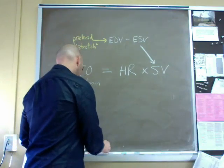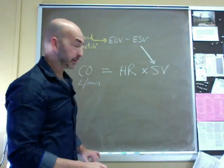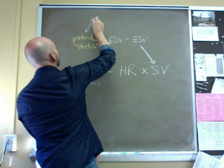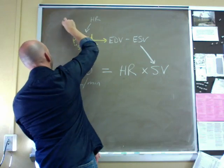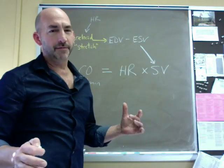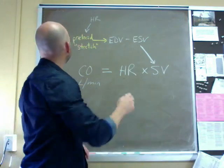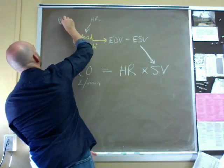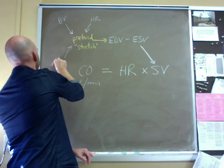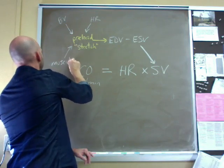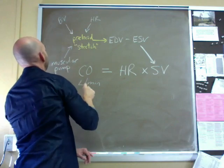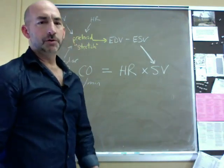And there are multiple variables that play into determining this preload. And they include, and now you can see it, heart rate. We have factors that affect blood volume, the amount of blood that's actually in the circuits. And then the last one we'll put down here as the muscular pump.